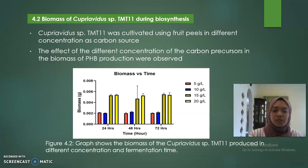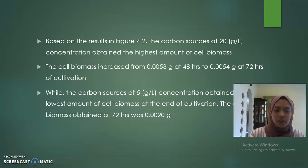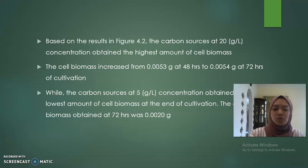Section 4.2, biomass of Cupriavidus sp. MT11 during biosynthesis. The MT11 was cultivated using fruit peels at different concentrations: 5, 10, 15, and 20 g/L as carbon source. The effect of different concentrations of the carbon precursors on the biomass of PHA production was observed. Figure 4.2 graph shows the biomass produced at different concentrations and fermentation times. Based on the results, the carbon source at 20 g/L concentration obtained the highest amount of cell biomass, increasing from 0.0053 g at 48 hours to 0.0054 g at 72 hours of cultivation, while the 5 g/L concentration obtained the lowest cell biomass of 0.0020 g at 72 hours.